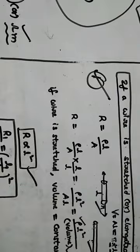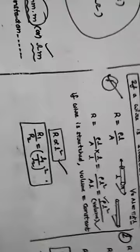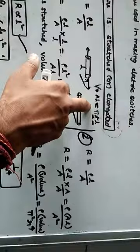So write the ratio: R1 by R2 equals (L1 by L2) whole squared. This formula is useful for solving numerical questions when length is mentioned in the given data.